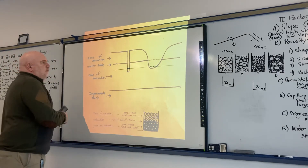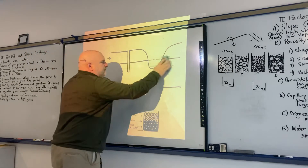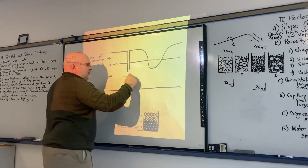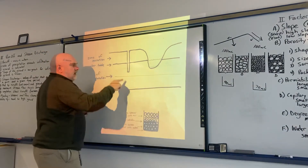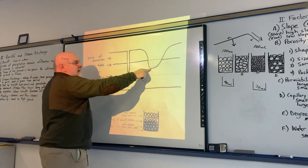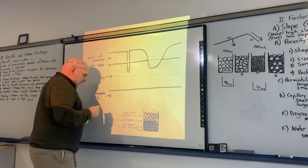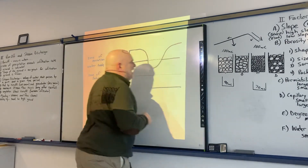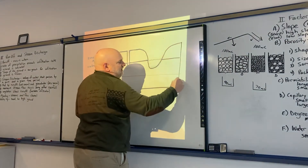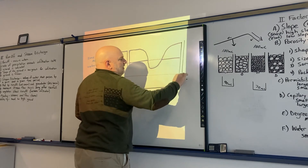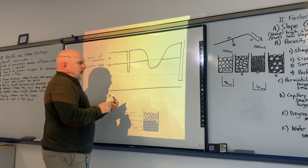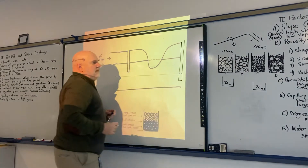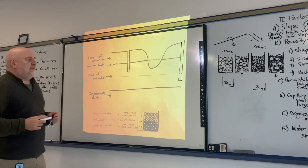If it hasn't rained in a long time, the water table drops. A shallow well could go dry, and streams and ponds would be significantly lower. If it gets even drier and the water table drops further, shallow wells and streams go completely dry. That's why deeper wells are better — they're less likely to go dry when the water table drops.